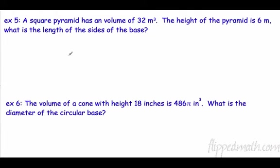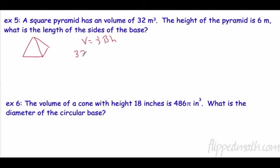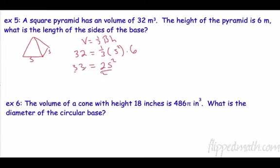A square pyramid has a volume of 32 cubic meters. The volume is one-third times the base area times the height. The volume is 32, and height is 6. For a square base, the area is s squared. One-third times 6 is 2, so 32 equals 2 times s squared. Divide both sides by 2: s squared equals 16, so the side equals 4 meters.